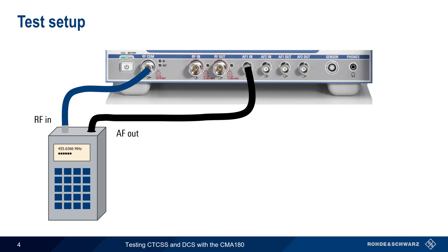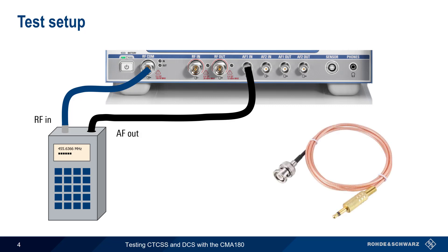The CMA180 audio frequency inputs are BNC connectors, so it's likely that a special cable or adapter will be needed to interface with the receiver's audio output — for example, a BNC to 3.5mm cable. Once the radio is connected, it should be tuned to the desired frequency, and audio output should be set to approximately mid-range.